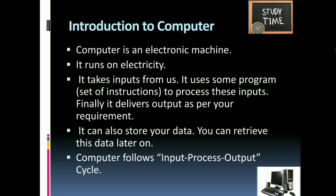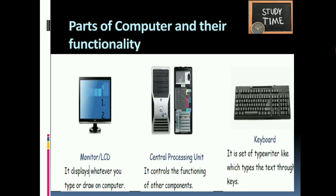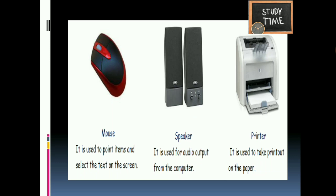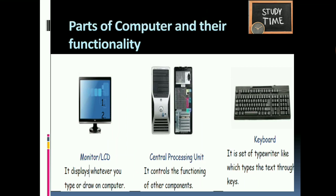Based on our requirement it processes instructions and gives output, so we call the computer an input-process-output cycle. The parts of a computer include: monitor or LCD, CPU (Central Processing Unit), keyboard, mouse, speaker, and printer. The monitor displays whatever you type or draw on the computer — it is like a TV.